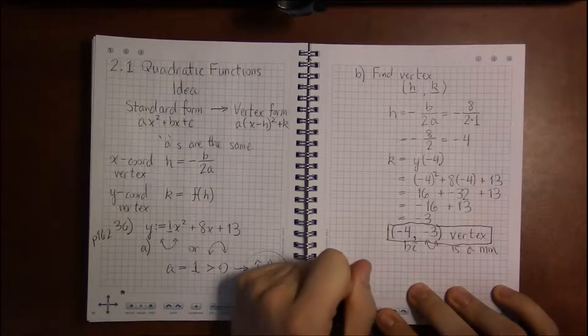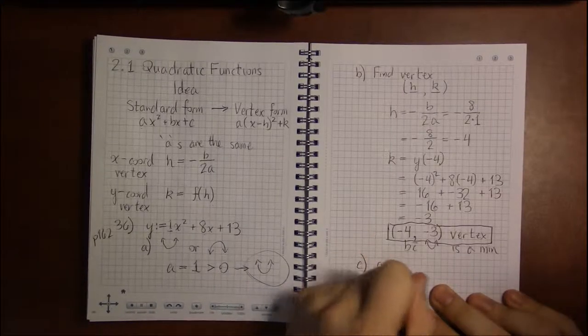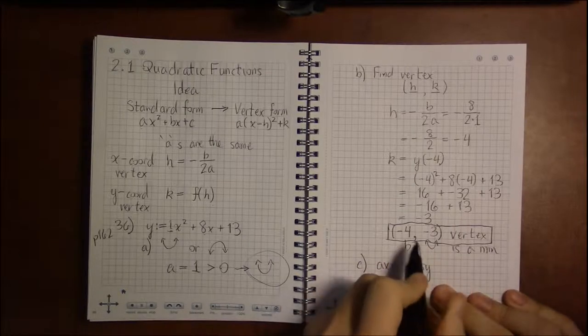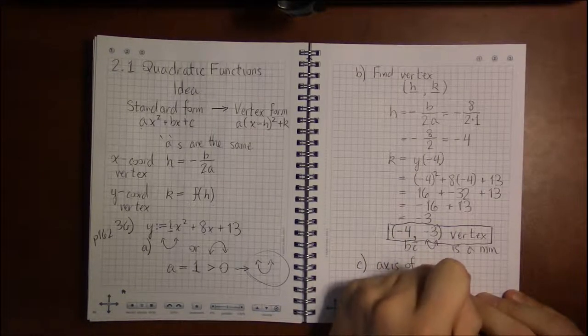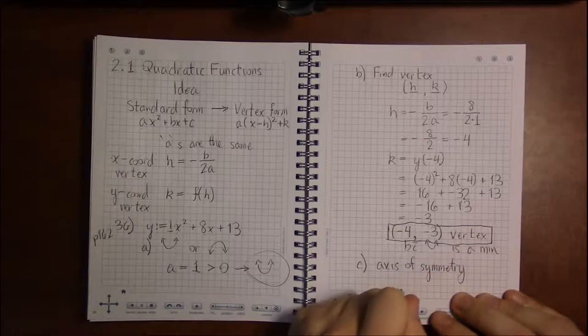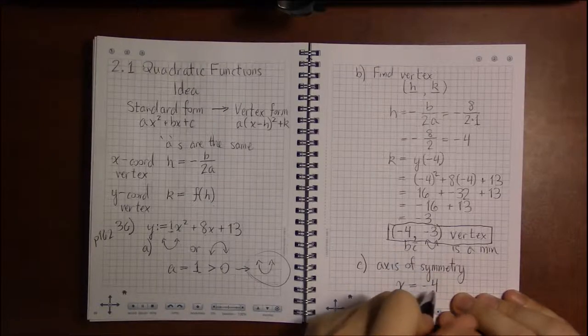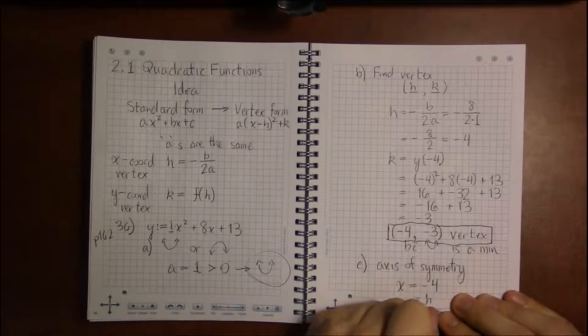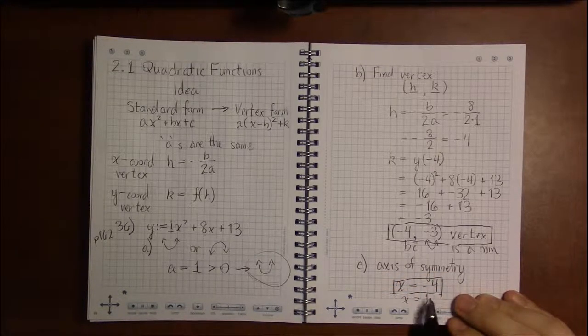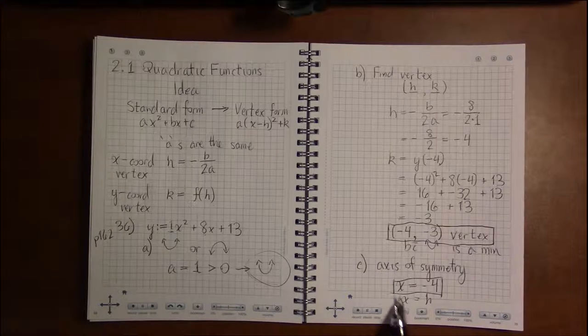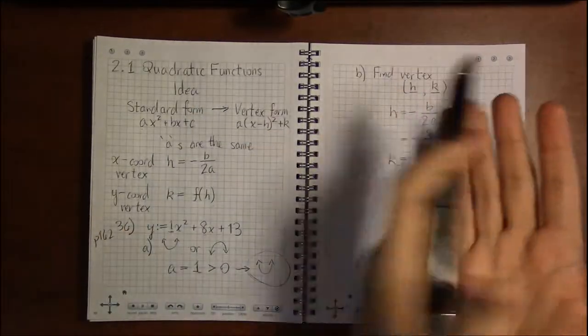Part c asks for the axis of symmetry. Now once you have the vertex, the axis of symmetry is very easy. It's just x equals the x coordinate. So the axis of symmetry is simply x equals minus 4. X equals h, in other words. And since we already know h, we don't have to do any more work. So this is the vertical line about which the parabola is metered.